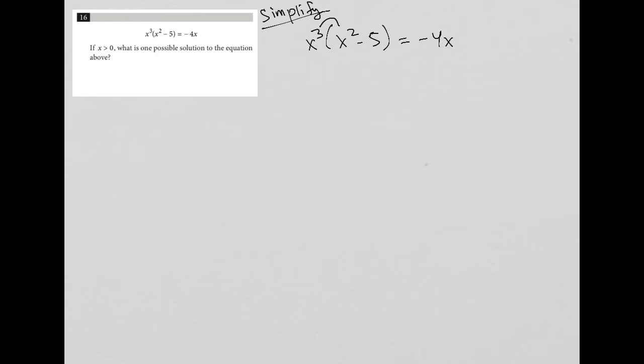I'd start off by distributing this x cubed across the parenthesis. So I'd have x cubed times x squared, which is x to the fifth, minus x cubed times five, which is minus 5x cubed, equals negative 4x.